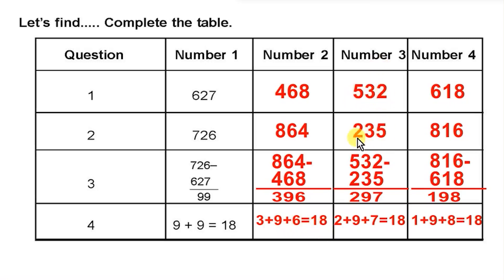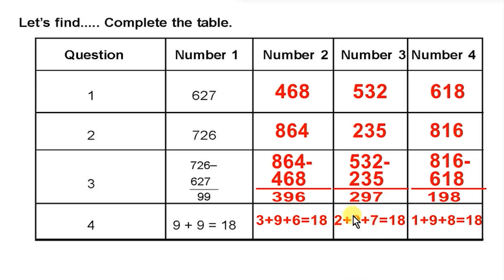Number 532. Reverse is 235. Subtract: 532 minus 235 gives 297. Add the digits: 2 plus 9 plus 7. 2 plus 9 is 11, and 11 plus 7 is 18.